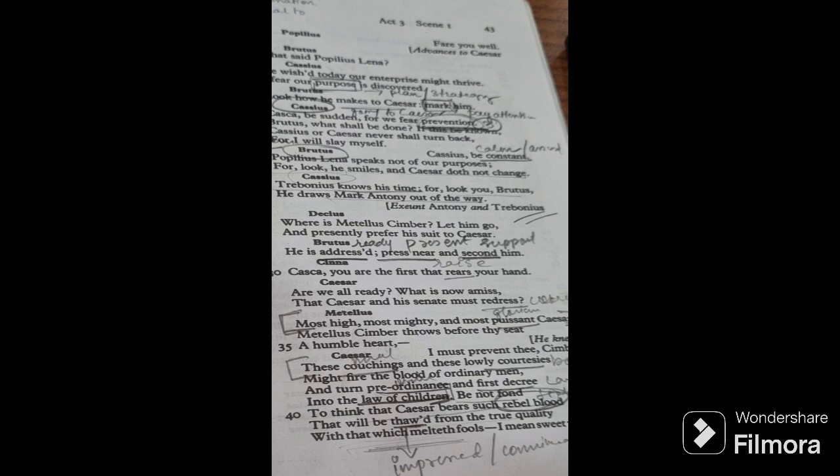Are we all ready? What is now amiss? What is wrong that Caesar and his Senate must redress? Underline the word redress. You are going to use it as an important keyword. Why is it important? Because redress is the theme that forms an important component of the play. Brutus also becomes part of the conspirators because he feels that we have to redress the wrongs. Similarly, here Caesar is asking, what is wrong? What is the thing? What is the problem? What should we correct?